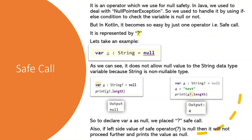So let's take an example where var a is equal to null, which is a type of String. So it is not allowed as String is non-nullable type. So to declare a as null, we have to place a safe call operator to let the compiler know that the value can be null.